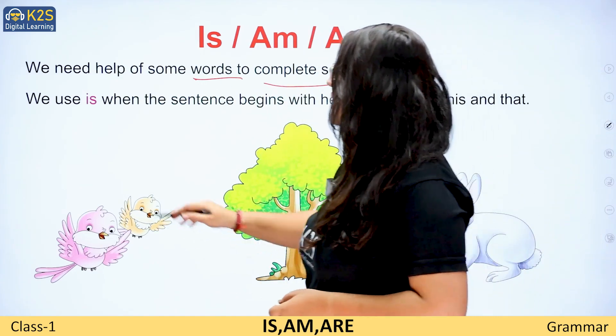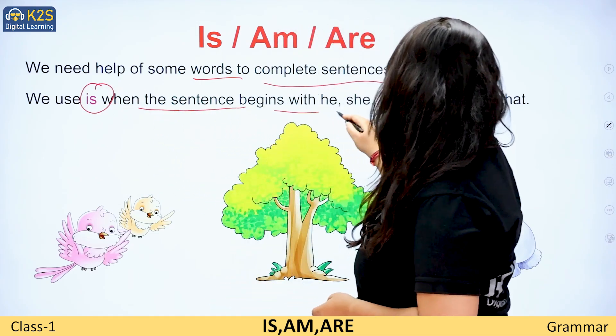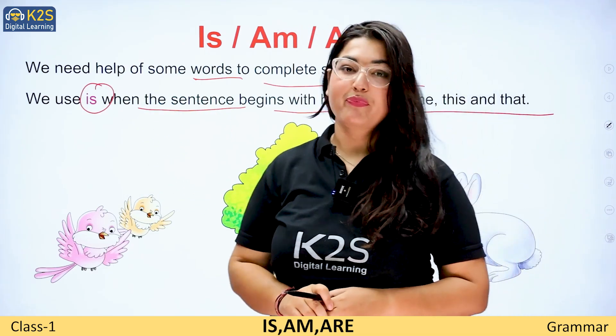We use 'is' when the sentence begins with he, she, it, a name, this, and that.